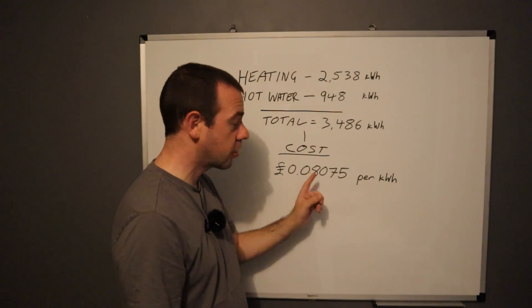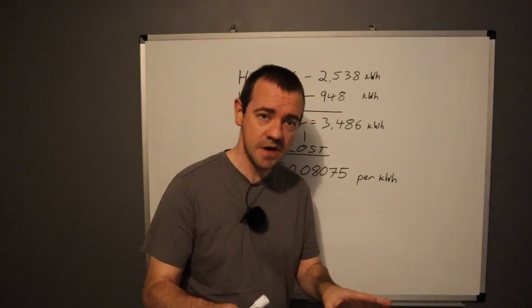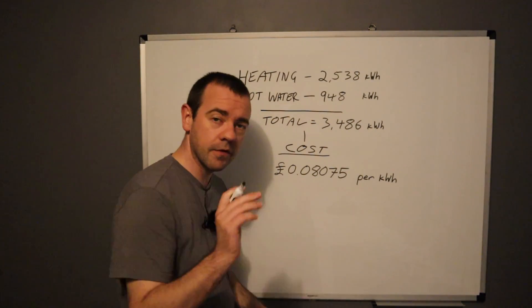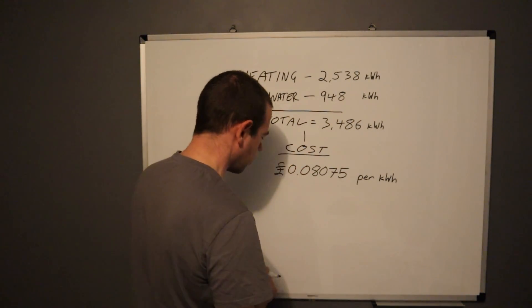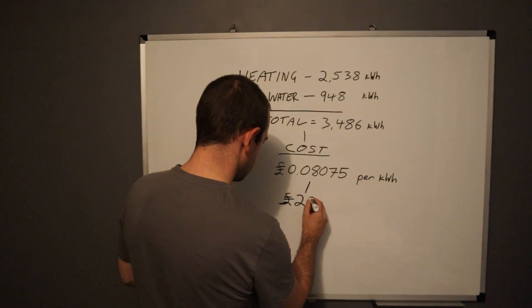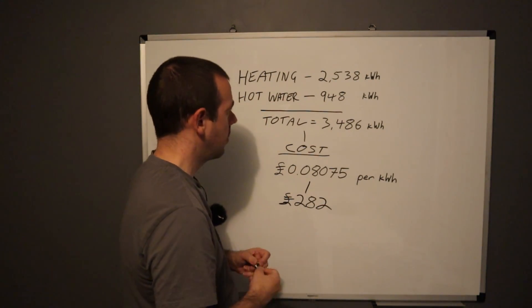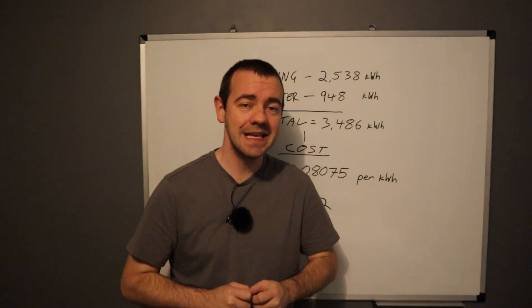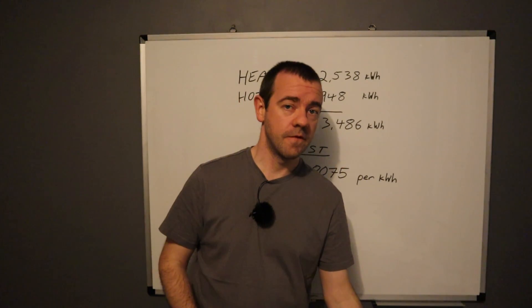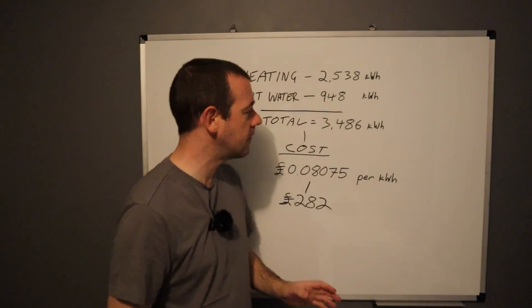then that much should cost us in this house for now, and I know we've got a lot of equipment, I'll come back to that in a second, that should cost us 282 pounds for our entire heating and hot water for a full year, full twelve months.